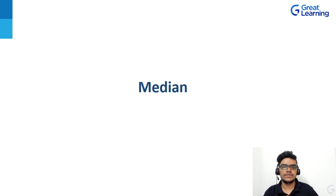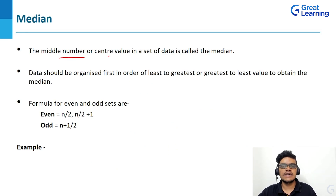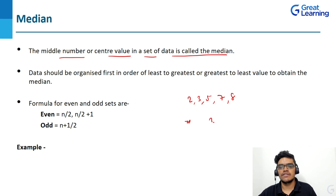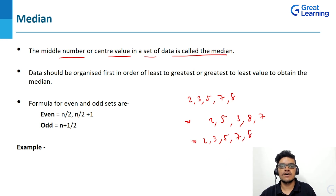Next, let's see what is median. Median is the middle number or center value in a set of data. For example, with values 2, 5, 3, 8, 7, you first sort them in ascending order: 2, 3, 5, 7, 8. For an odd count (n=5), the median position is (n+1)/2 = (5+1)/2 = 3. So the third value, 5, is the median.